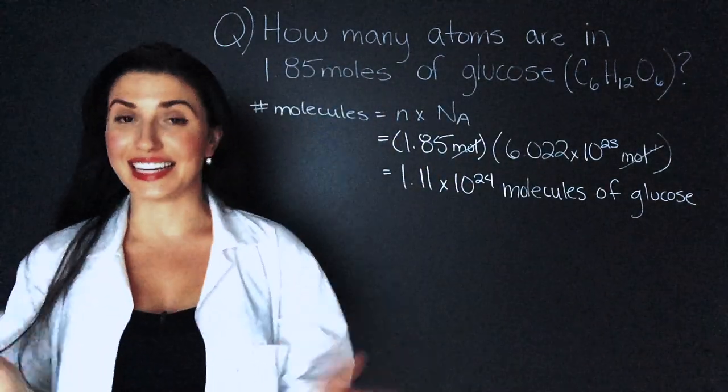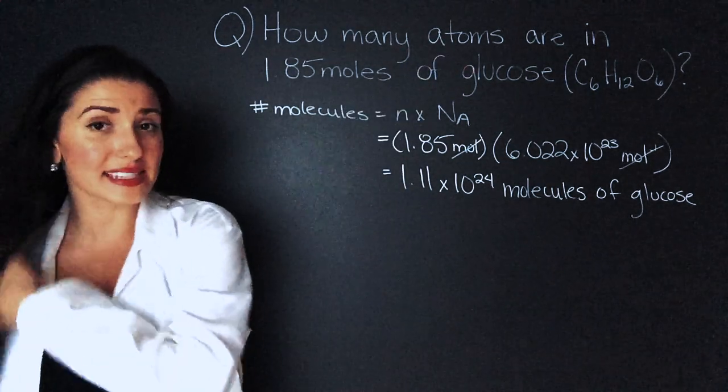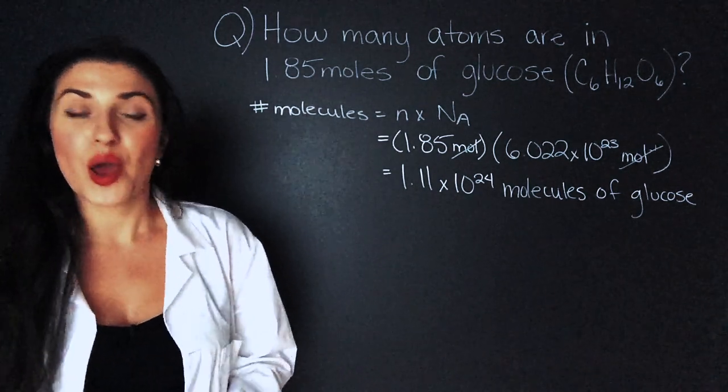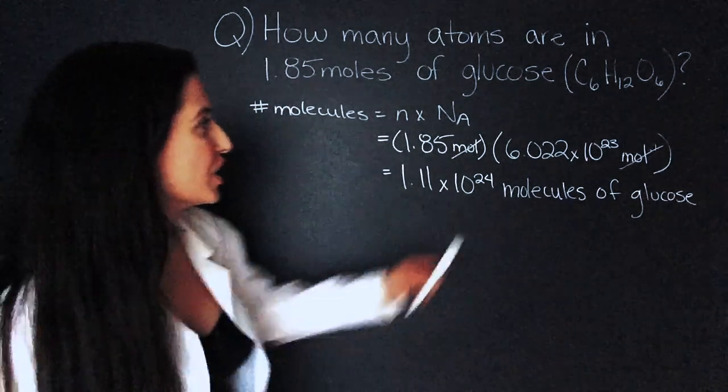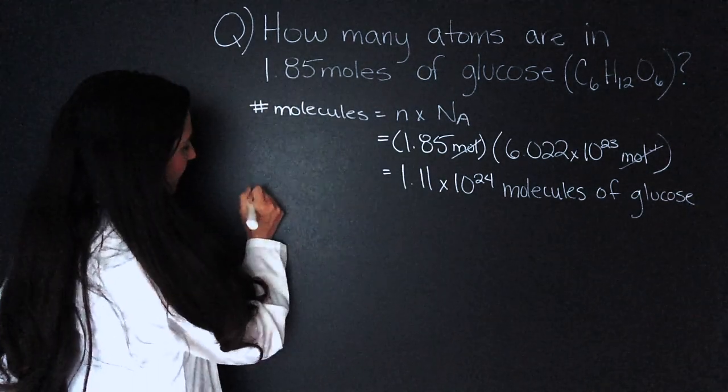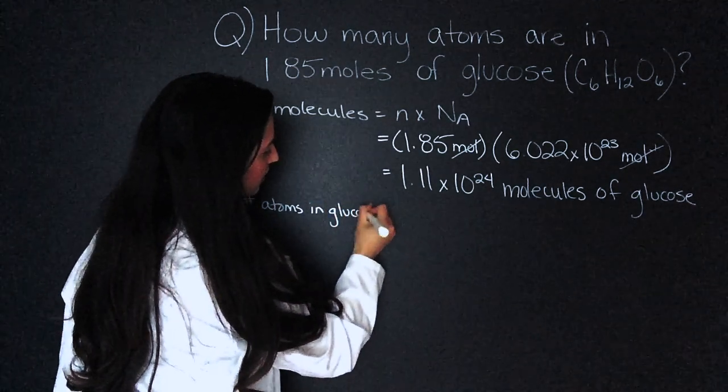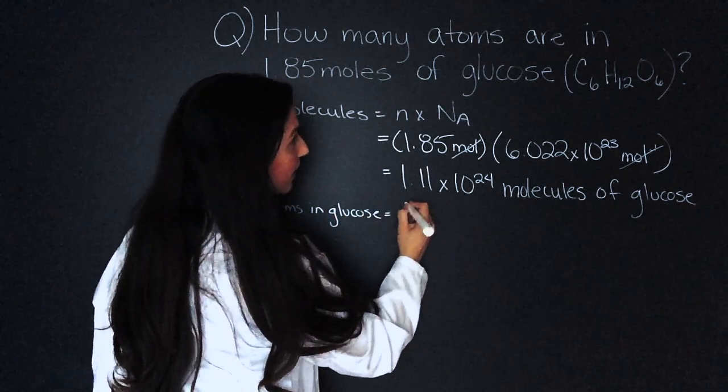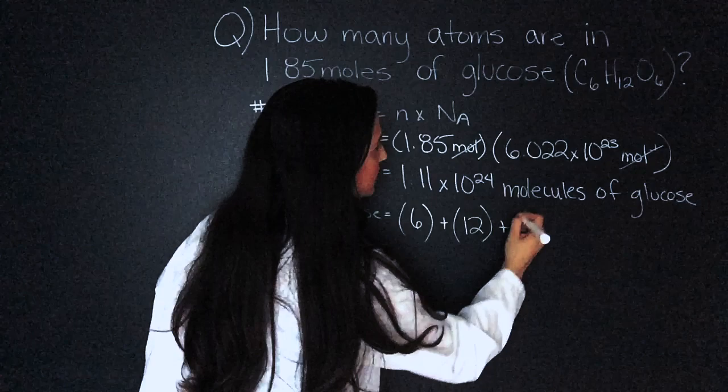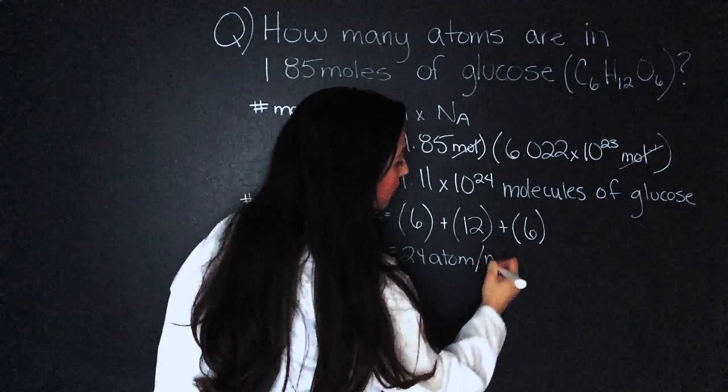Now they didn't ask how many molecules of glucose. They asked how many atoms are in this. They didn't ask a specific atom. So what we have to do is find out how many atoms are in one molecule of glucose. We do that by adding up the empirical formula. So we have C6H12O6. So we have number of atoms in glucose are the 6 carbons plus the 12 hydrogens plus the 6 oxygens which equals 24 atoms per molecule.